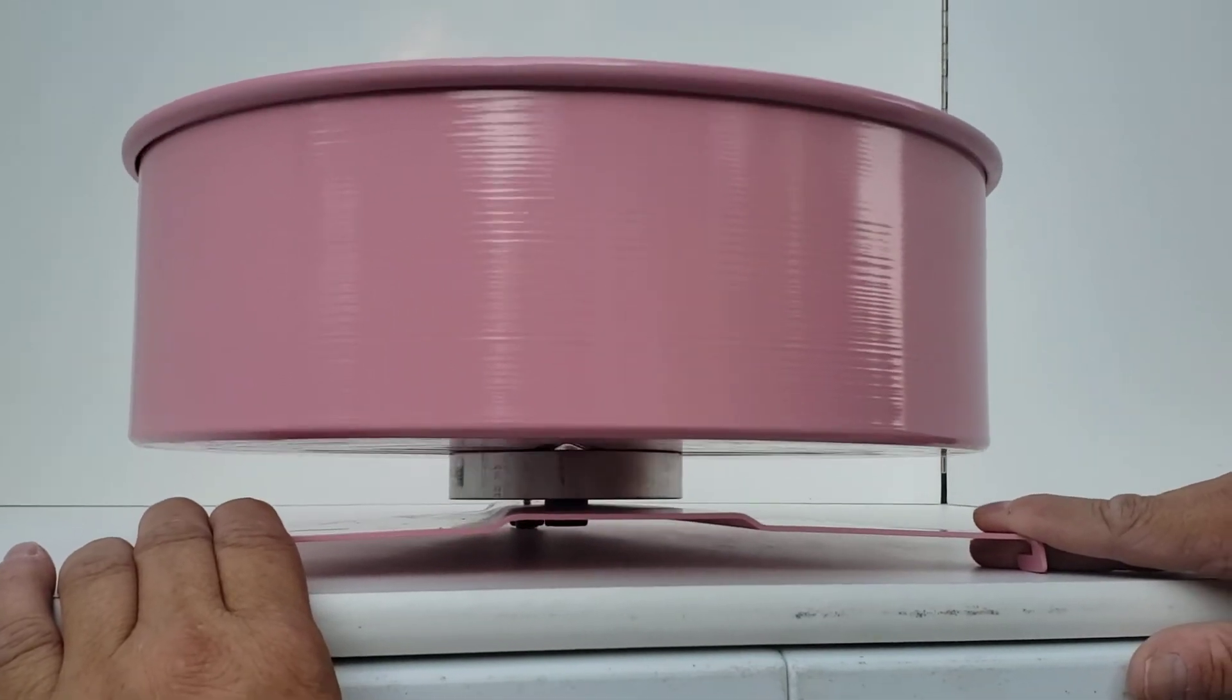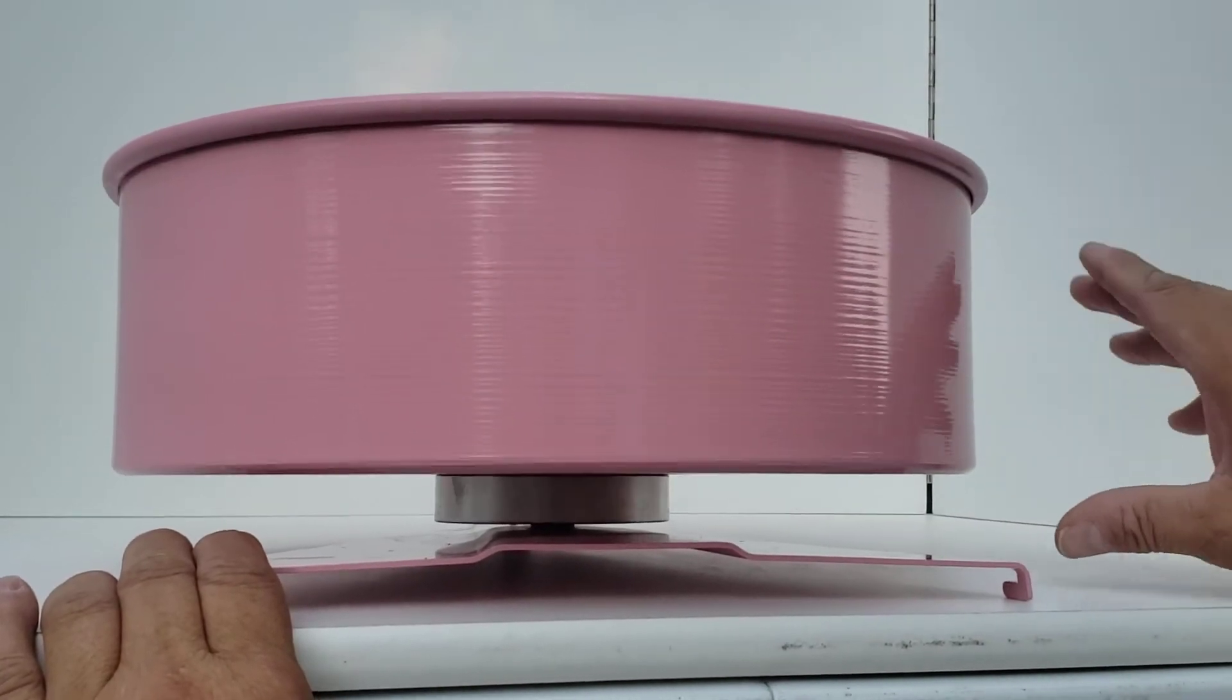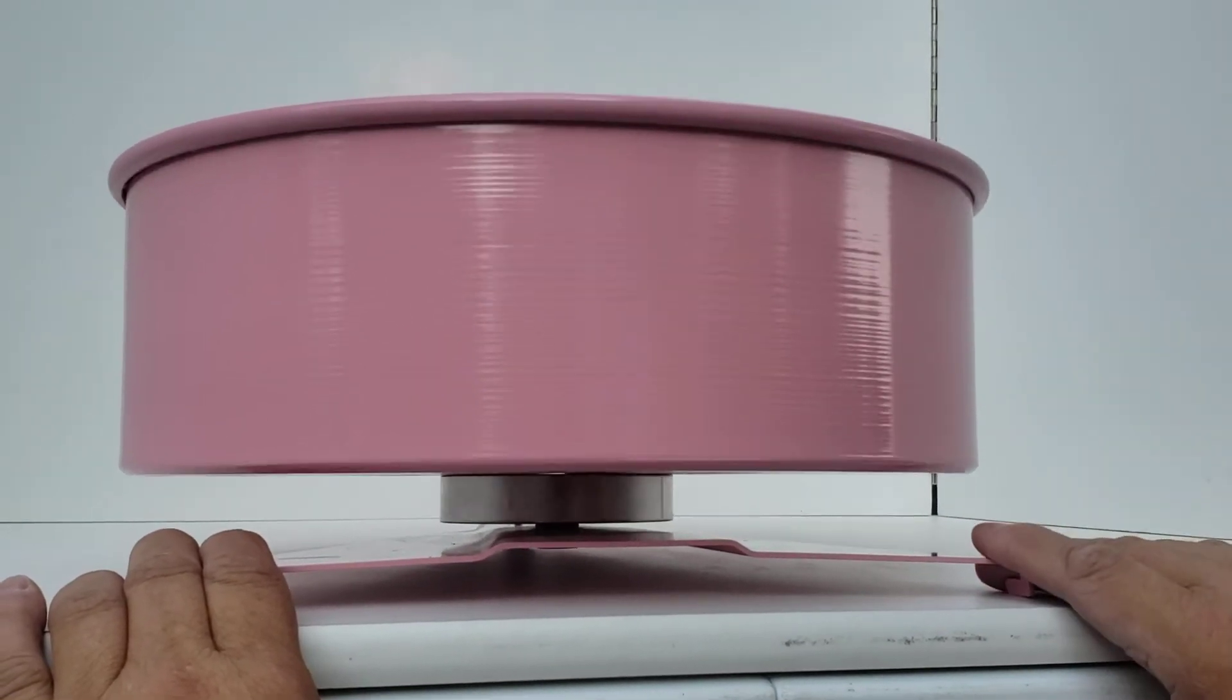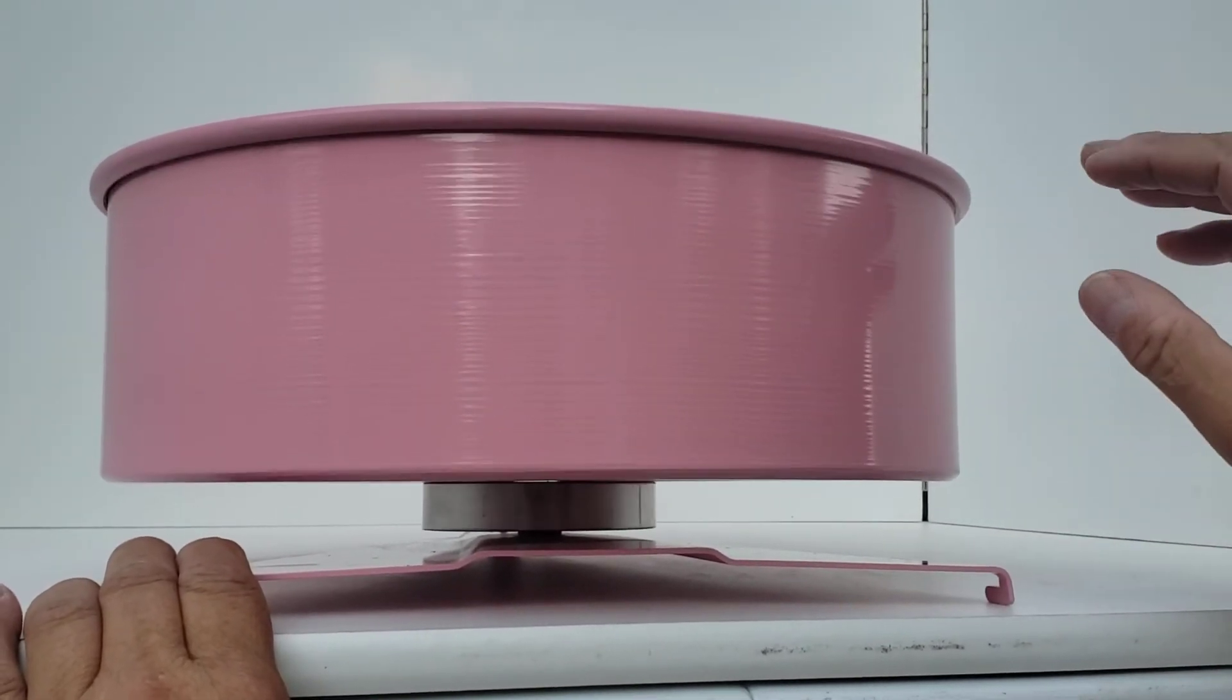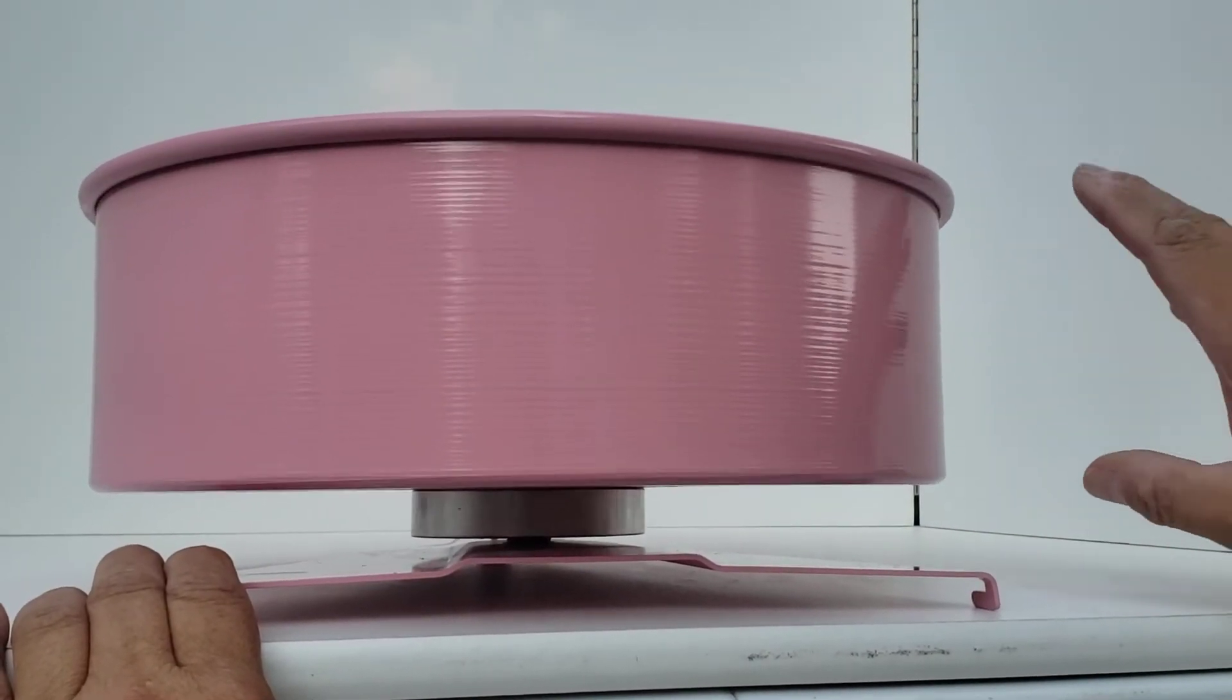Sometimes during shipping with UPS or FedEx, this wheel will get knocked out of alignment. In order to fix that, you'll want to take it out of your cage, set it on a tabletop and turn it. You'll notice that the wheel as it's turning goes up and down.